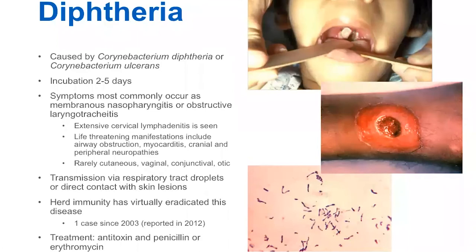Transmission of the toxigenic strain is usually by respiratory tract droplets or direct contact with a skin lesion. Overall, the case fatality rate is 5% to 10%. Most often it's patients less than 5 years or older patients who end up dying, and really this hasn't changed in the last 50 years.